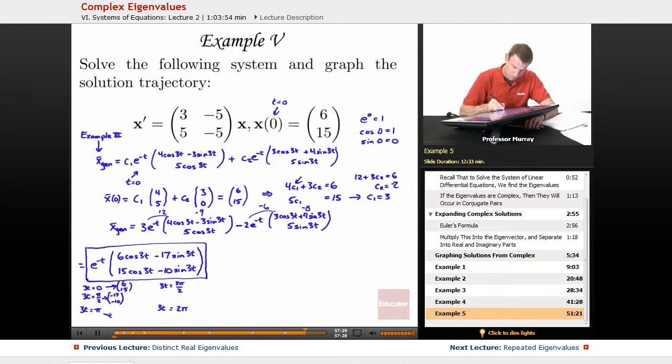Pi will give me, the cosines give me negative 1, so [-6; -15].